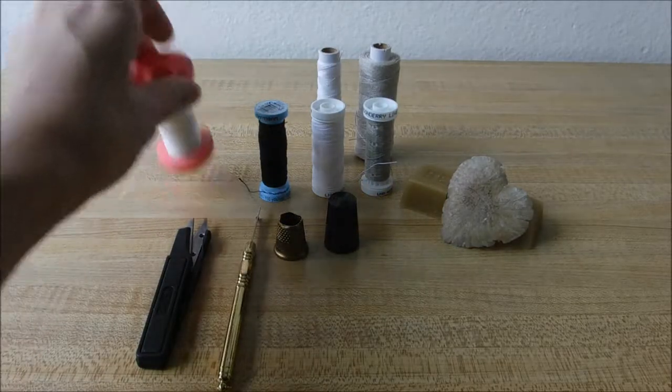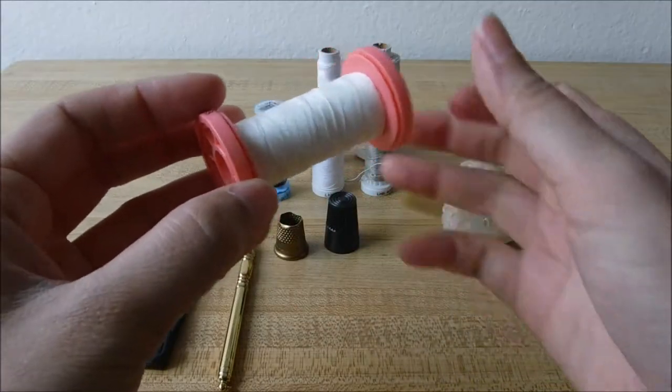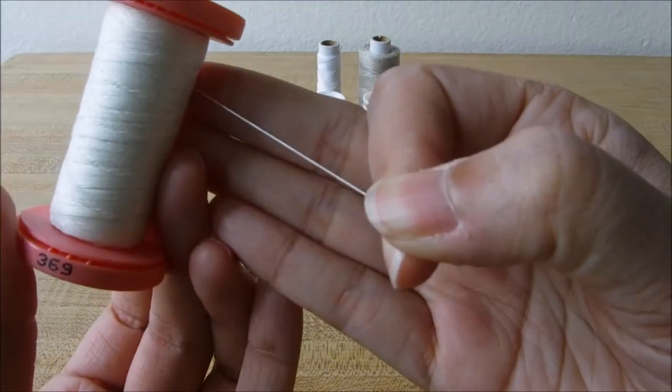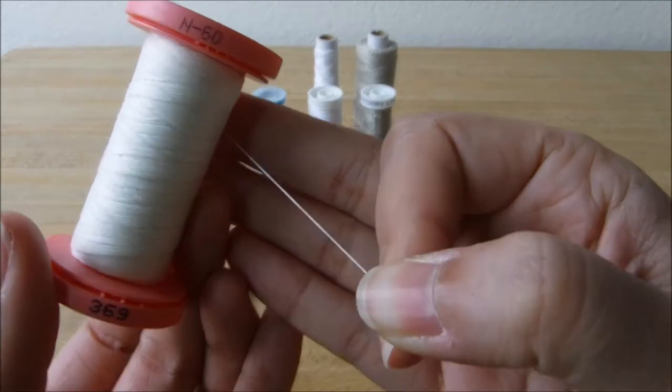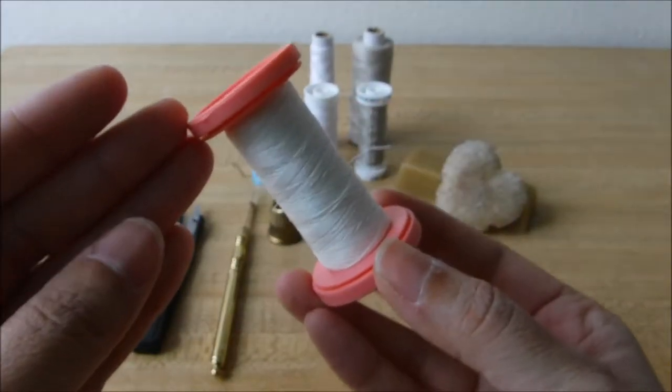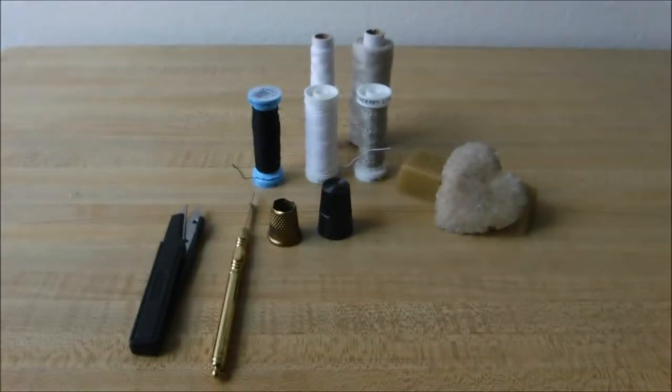Next up is thread. Thread is extremely important. You want to buy the best quality thread that you can for your project. This is a Presencia thread. It is a 63, so 60 weight, three ply. I love this cotton thread. It is my favorite to use.